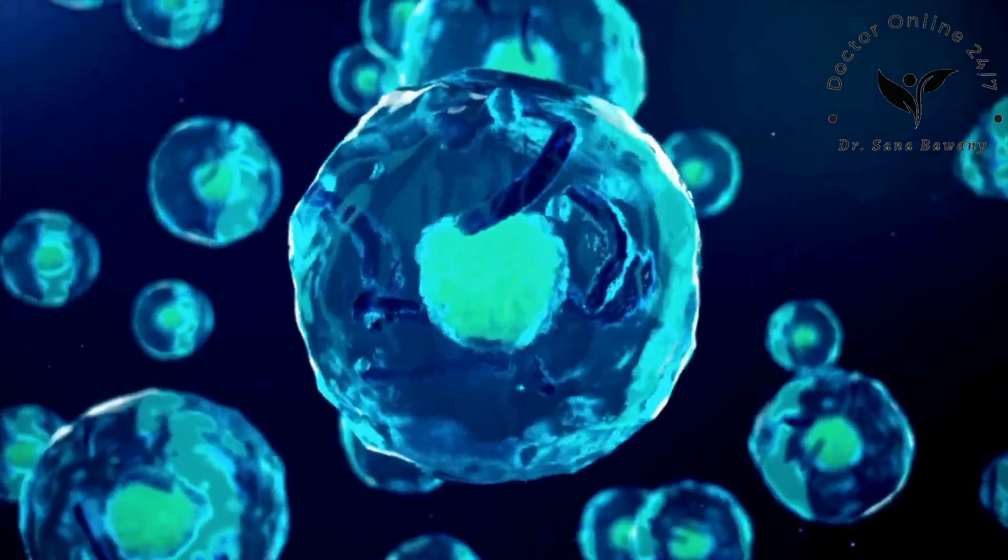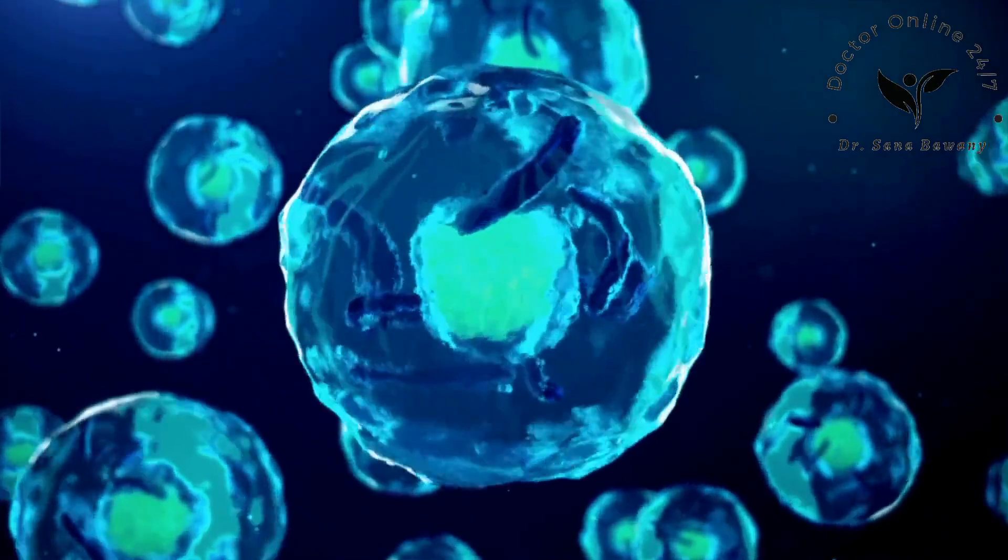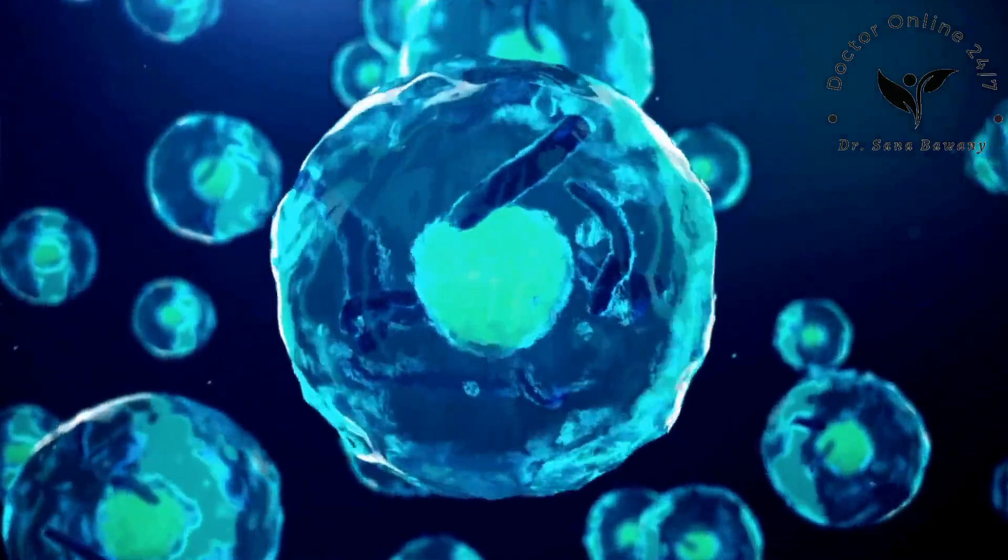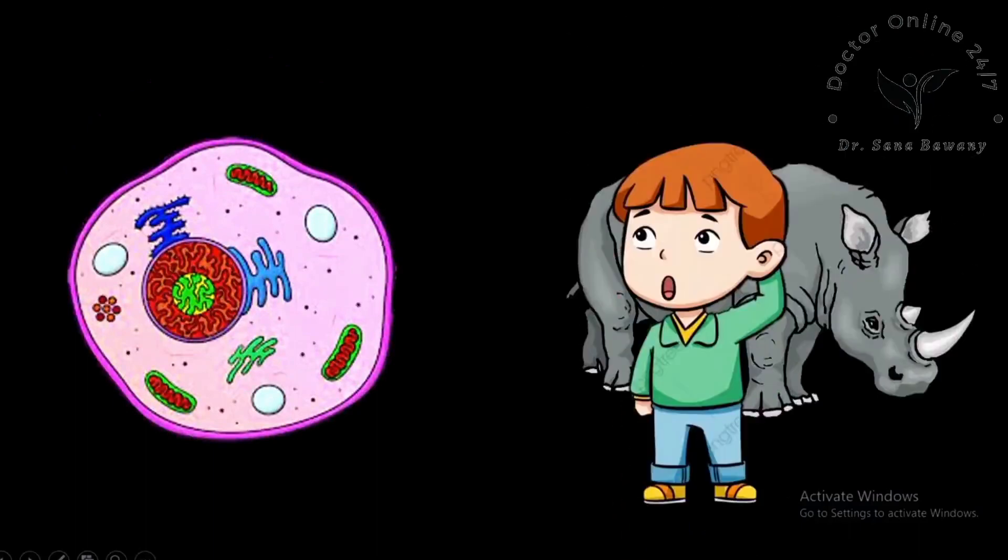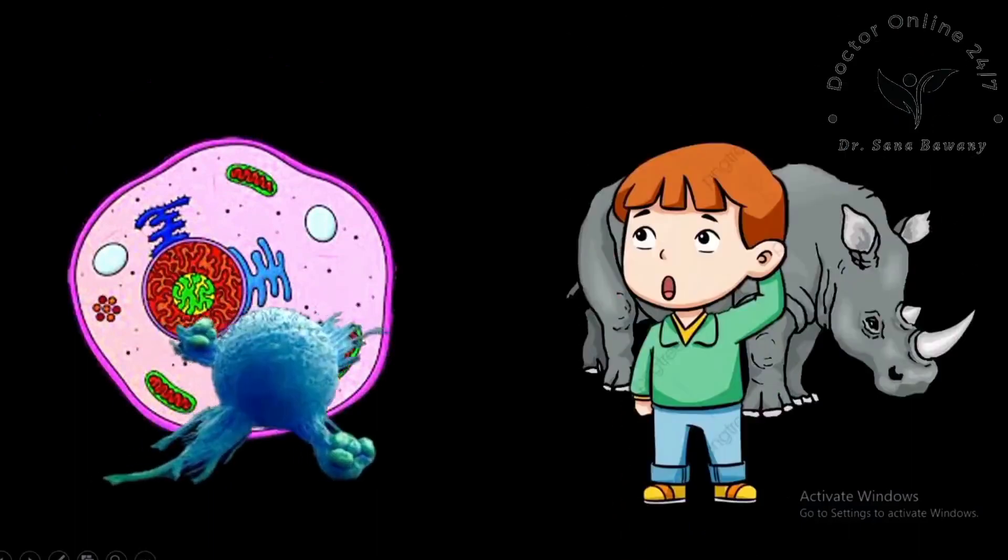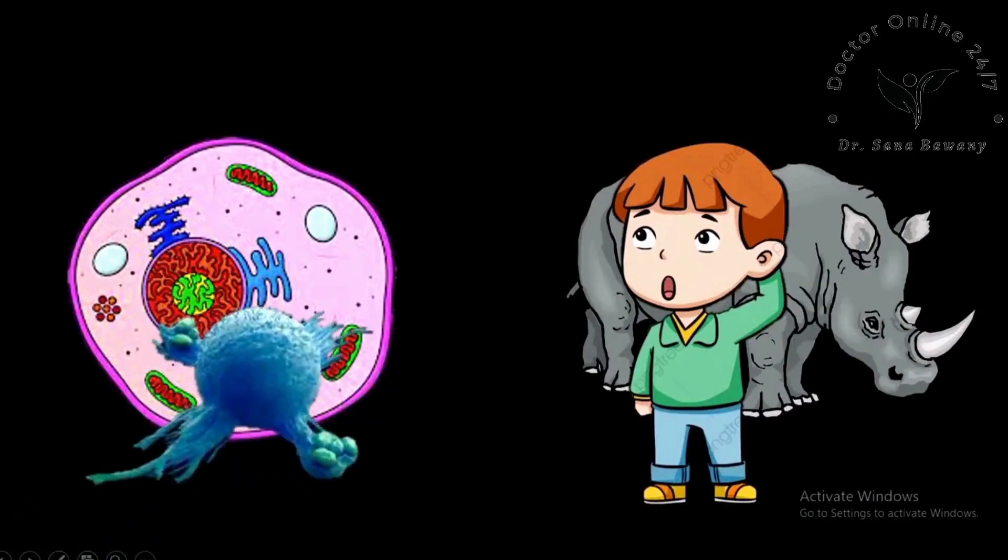The first cells to show up are macrophages. If an average cell were the size of a human, a macrophage would be the size of a black rhino. A stoic cell, in principle, but you wouldn't want to annoy it. Bacteria do annoy them.